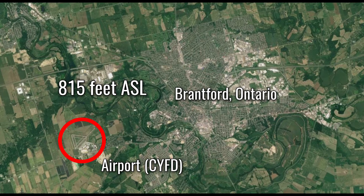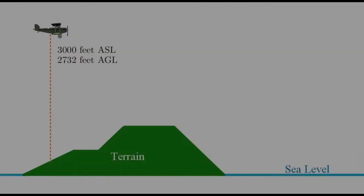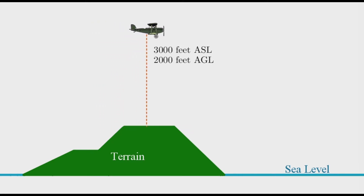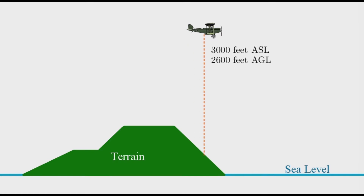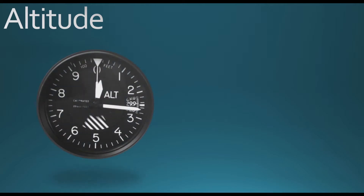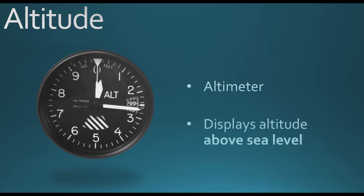For example, the city of Brantford and the Brantford Airport have an elevation of 815 feet above sea level. As a plane cruises, its altitude above ground level will change depending on the terrain below, but its altitude above sea level remains the same. The instrument inside the plane that measures the aircraft's altitude is called an altimeter, and it measures the plane's altitude above sea level.